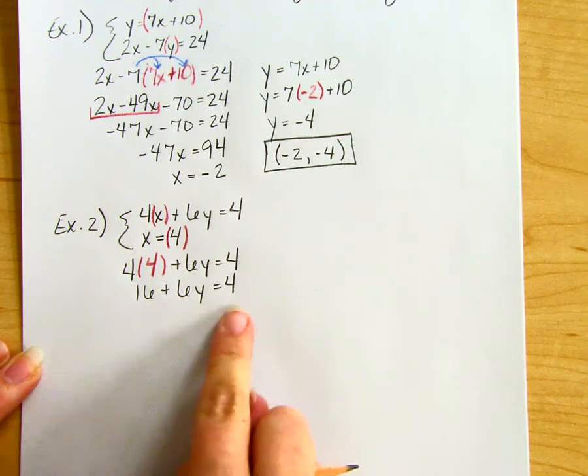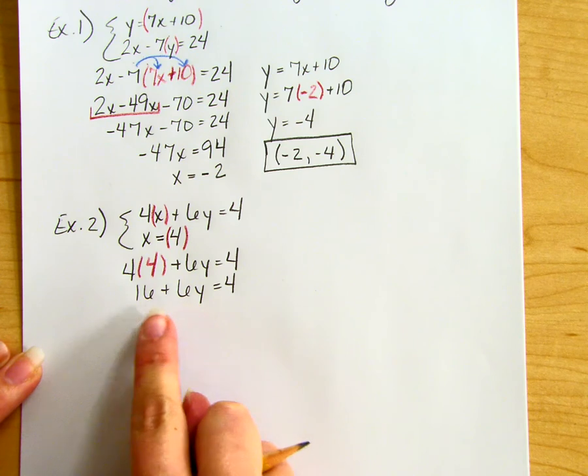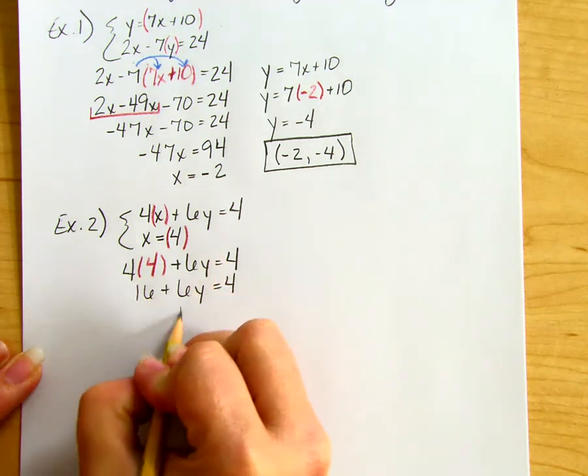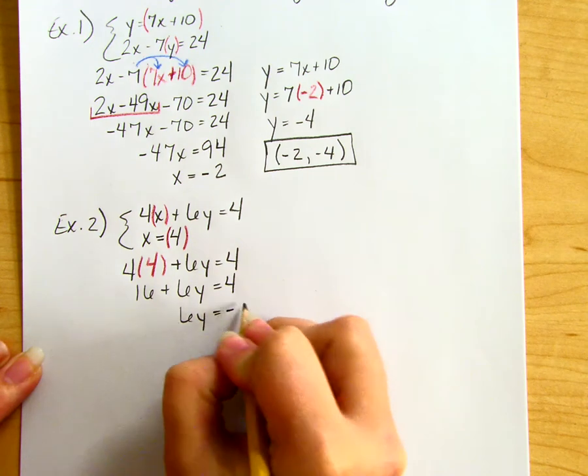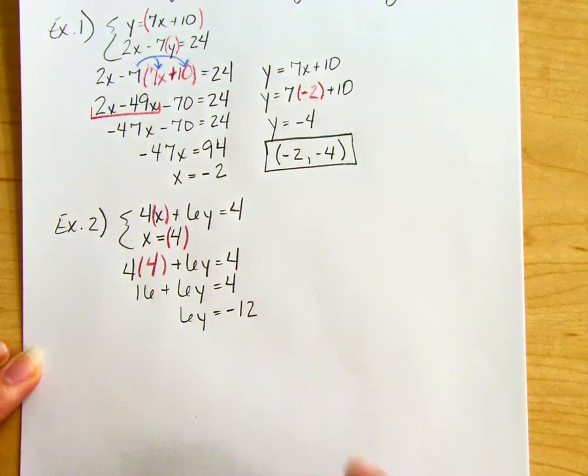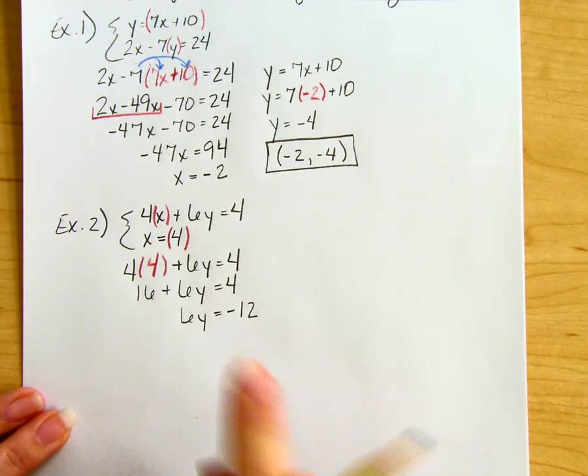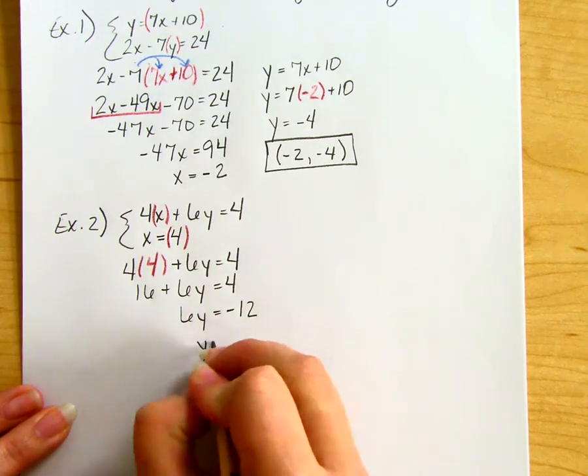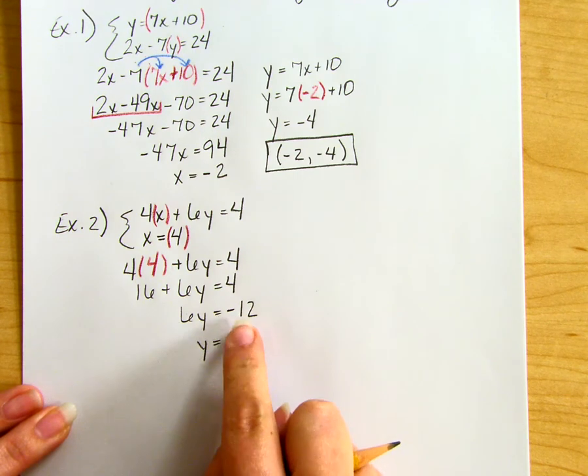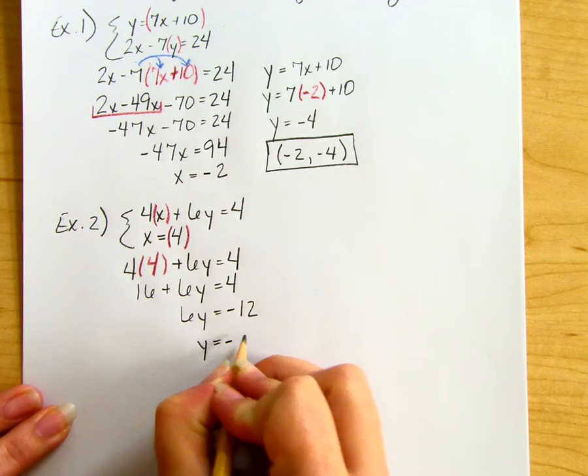I'll subtract 16 from both sides to solve for y. So 6y = 4 - 16 = -12. Then I'll divide both sides by 6, and I get y = -12 ÷ 6 = -2.